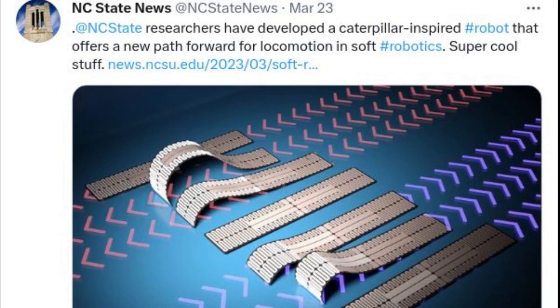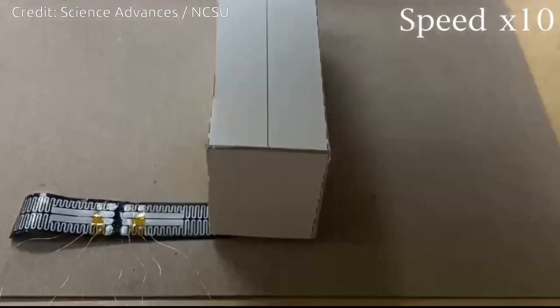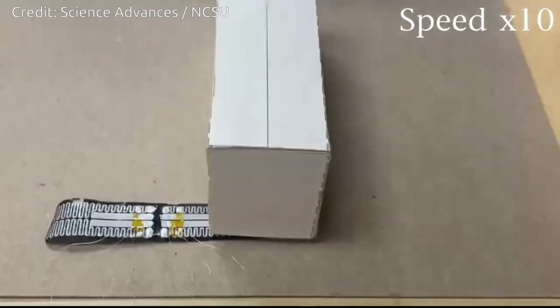Researchers at North Carolina State University have demonstrated a caterpillar-like soft robot that can move forward, backward, and dip under narrow spaces.